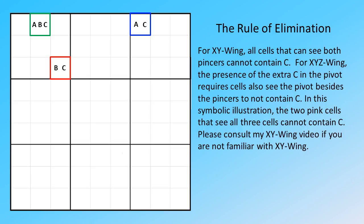In this symbolic illustration, the two pink cells that see all three cells cannot contain C. Please consult my XY Wing video if you are not familiar with XY Wing.